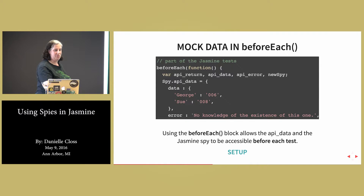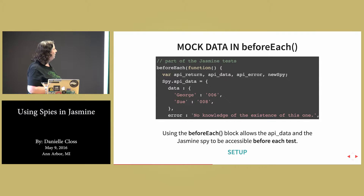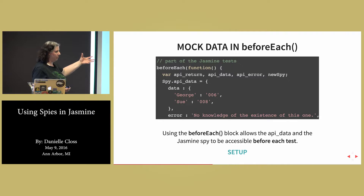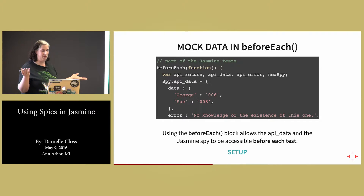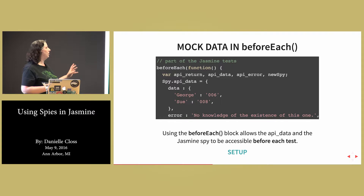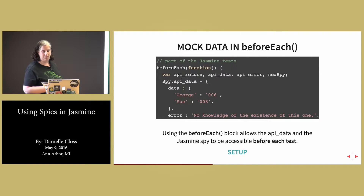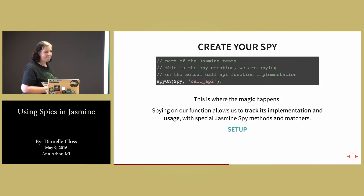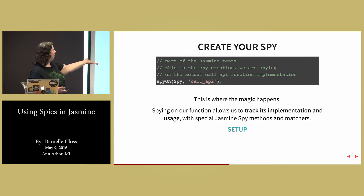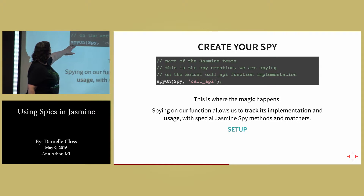The next thing you want to do is take that API data call and make sure that it's in a beforeEach block if you need it before each of your tests. A lot of you have used Jasmine before, so you know what beforeEach does — it allows you to have anything in the beforeEach for each test. Then you want to create your spy. This is the magic of Jasmine spies — this is the spyOn function right here.